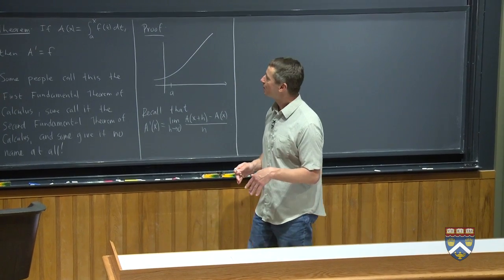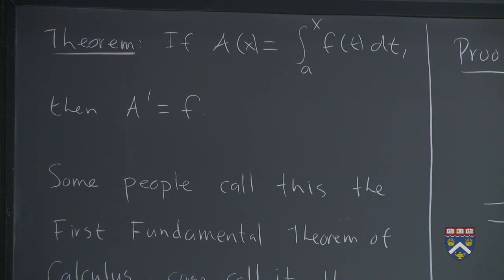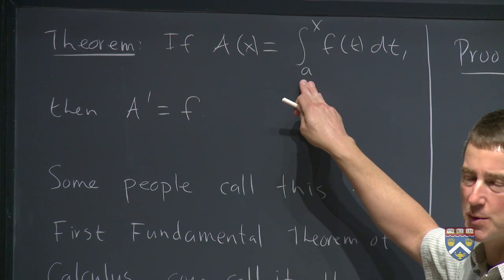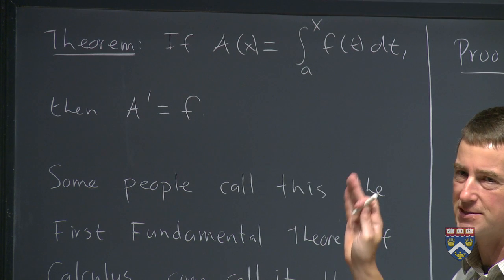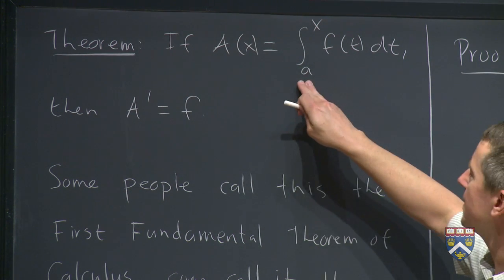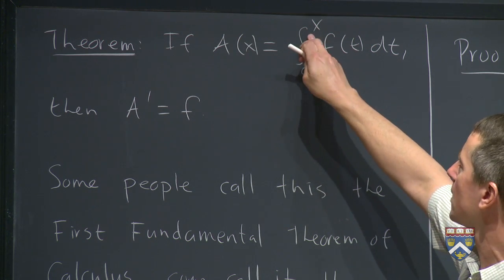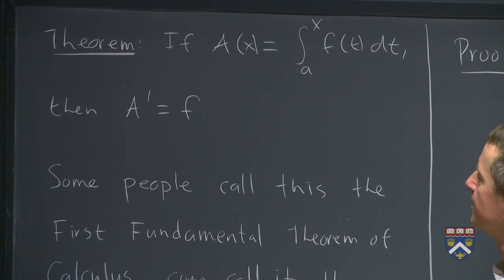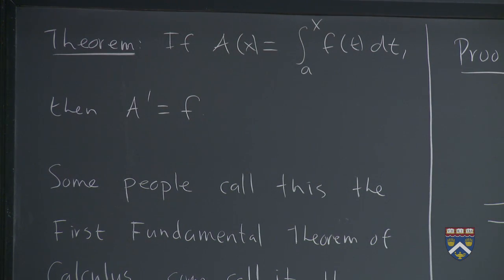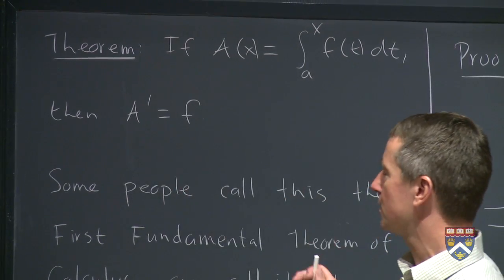Very curious. So this statement rises to the level of a theorem. This is really worth calling a theorem. If I make my area function, and in the previous two examples, we were starting at zero, but there was nothing special about starting at zero. It doesn't matter where you start. Starting from some unknown point A going over to x of my function little f of t, and I'm saying little f because in a little bit, we're going to start talking about capital F as well. Then the derivative of the area function is this little f.